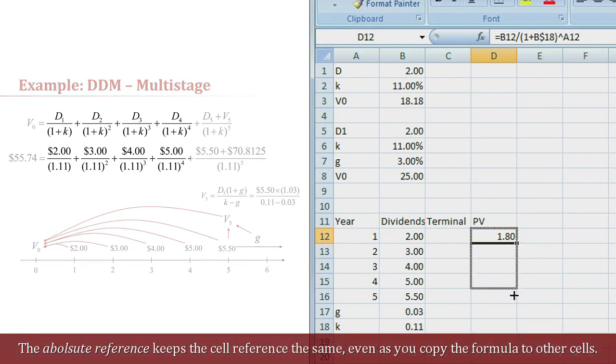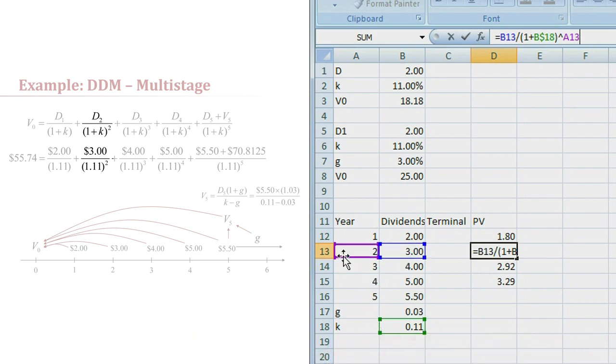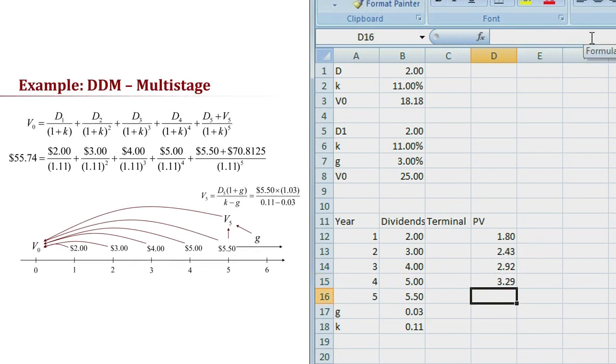Now I can just drag this down for each year and you'll see that the present value of the dividend in year 2 is $3 divided by 1 plus the discount rate raised to the 2 power. Same thing goes for year 3 and year 4. Now I've left year 5 blank.